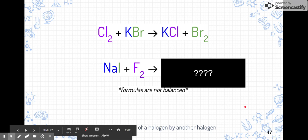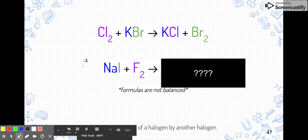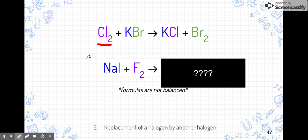Now let's look at the second type of single replacement reaction, which involves the halogen group — group 17 on the periodic table — things like fluorine, chlorine, bromine, and iodine. In this example, chlorine (Cl₂) is our single element. Chlorine will want to replace bromine in potassium bromide, since both are halogens. Importantly, all halogens will always replace other halogens — you don't need to consult the activity series because halogens aren't part of that series.